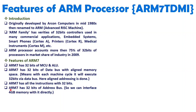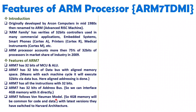ARM7 has a 32-bit address bus, so at maximum we can interface 4 GB of memory with ARM7 directly. ARM7 follows Von Neumann model of architecture — in Von Neumann model, when we interface memory with the processor, that memory holds both code and data. So memory for code and data is common with ARM7. Later versions were upgraded to Harvard architecture.